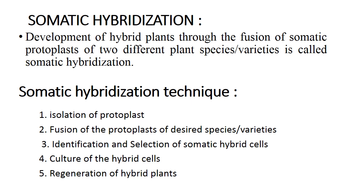Coming to the second technique, somatic hybridization: this is development of hybrid plants through fusion of somatic protoplasts of two different plants, species, or varieties. The steps are: isolation of protoplasts, fusion of protoplasts of desired species or varieties, identification and selection of somatic hybrid cells, and culture of hybrid cells and regeneration of hybrid plants.